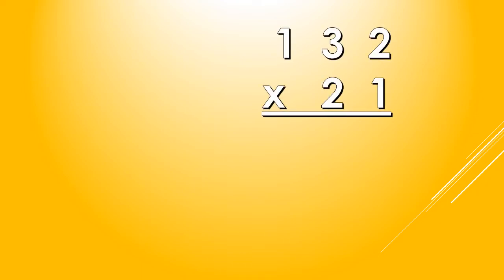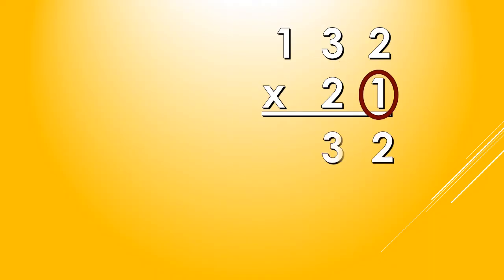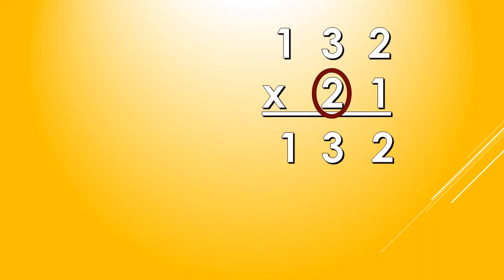Okay, let's have another example. Let's multiply 132 by 21. So, 132 times 21 — we multiply first the 1's digit of the Multiplier to the Multiplicand starting from the right. So, 1 times 2 is 2, 1 times 3 is 3, and 1 times 1 is 1. And then, we multiply the 10's digit of the Multiplier to the Multiplicand again starting from the right. 2 times 2 is 4. Now, why did we write 4 at the 10's place value?